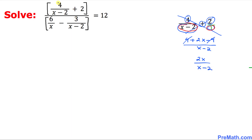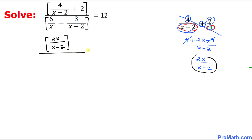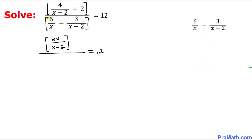So therefore the top part can be replaced by this simplified form. I can write this as: on the top it is going to become 2x over x minus two, divided by, and then equals twelve.